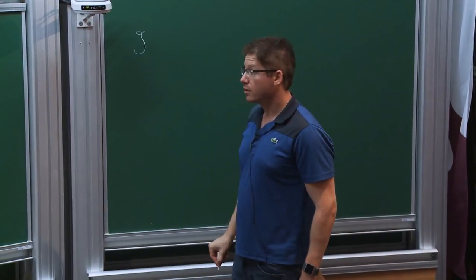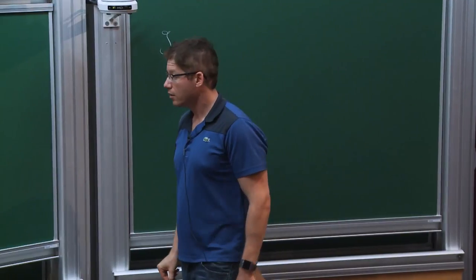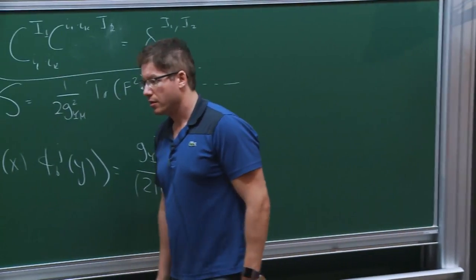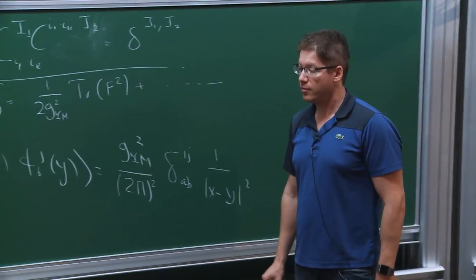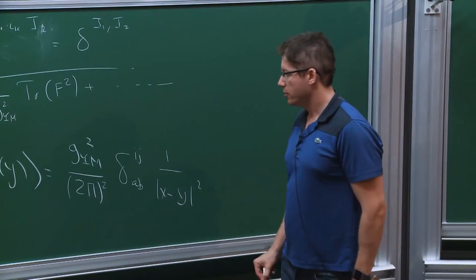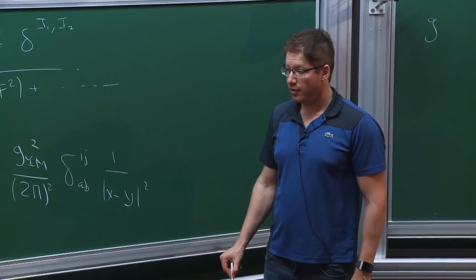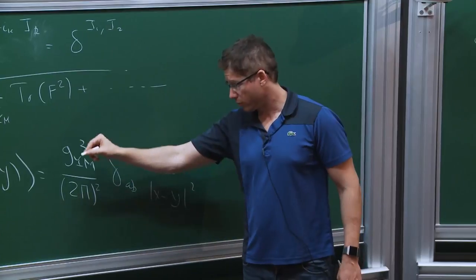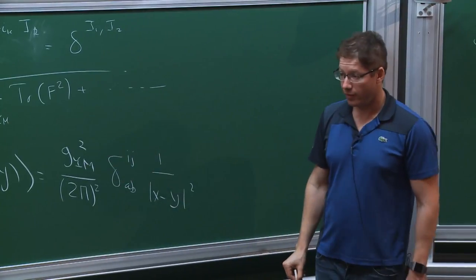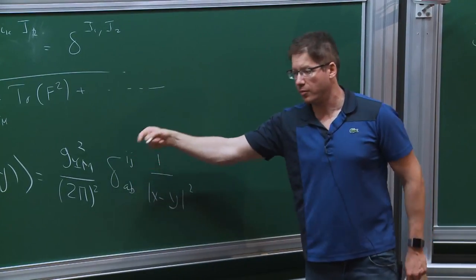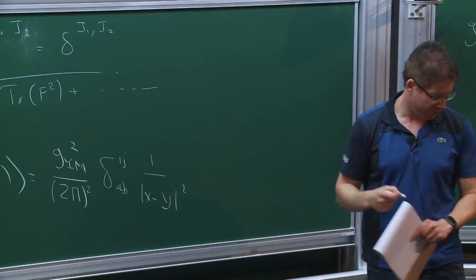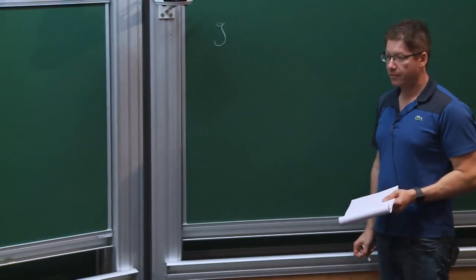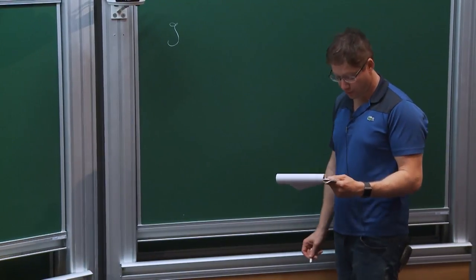By zero coupling, I mean the Born approximation — no loops, only Wick contractions. There will be some dependence on the coupling, but it just arises from the normalization of the propagators. So it's the leading non-trivial order. Using those formulas, you can compute the two-point function of any two such operators using Wick contractions.